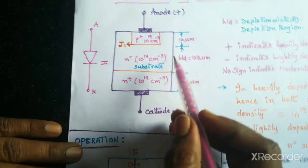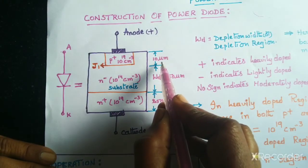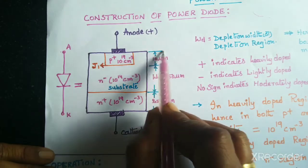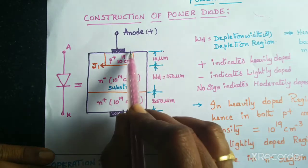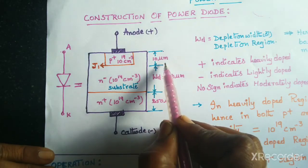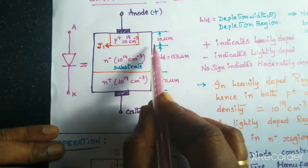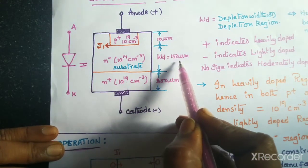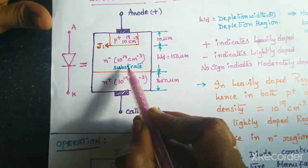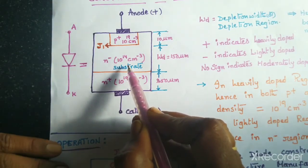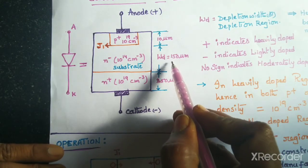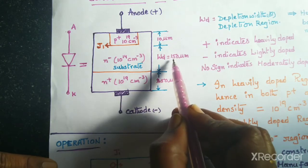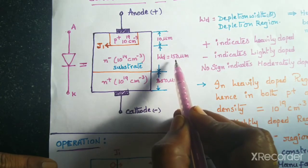Whenever doping is high, the depletion width will be less. Here, the P plus region has a thickness of only 10 micrometers. And this N minus substrate has a depletion width of 150 micrometers, because whenever the doping level is less, the depletion width will be more. But here, the depletion width is not constant — it is variable.